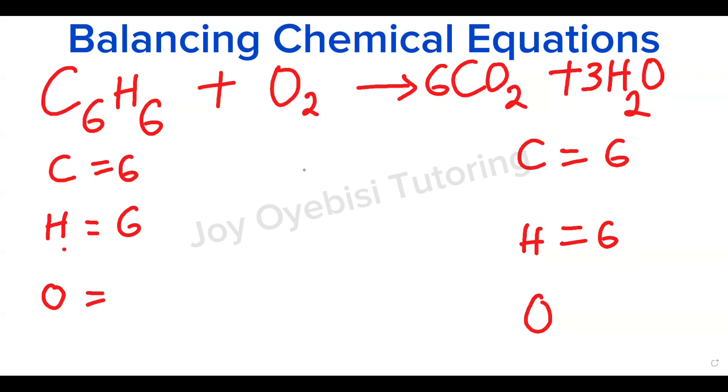Next, we have oxygen. On the left-hand side, I have two. On the right, this is six times two, 12, plus this three. Now, this three affects the oxygen as well. So that means you have 15 oxygens. Six times two, 12, plus three, that is 15.